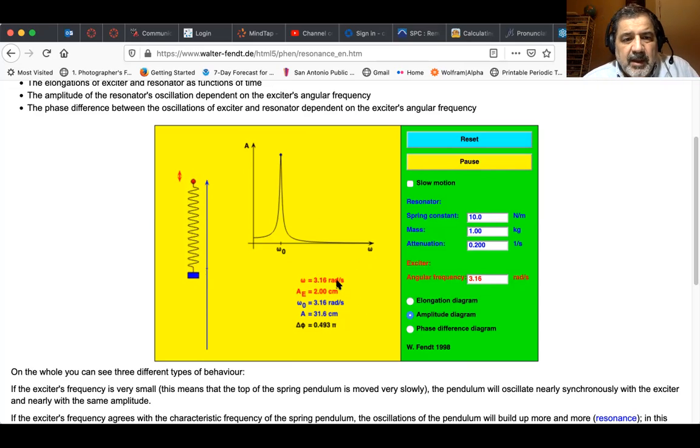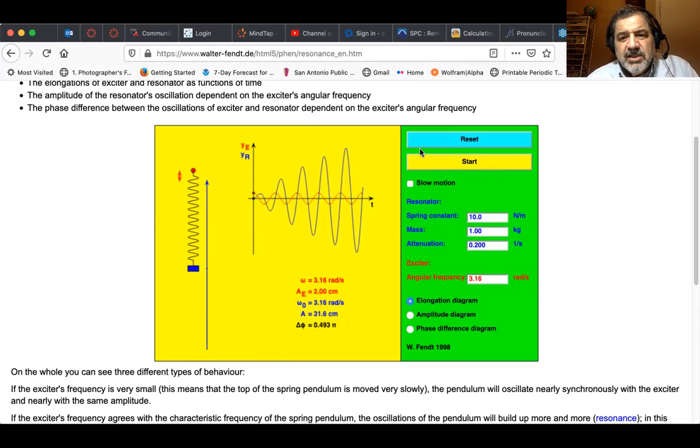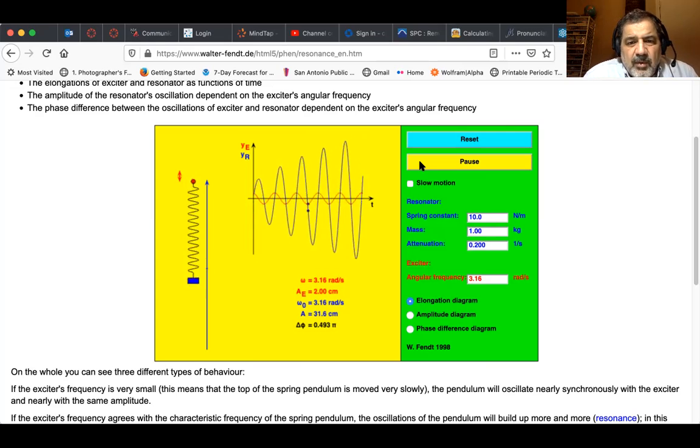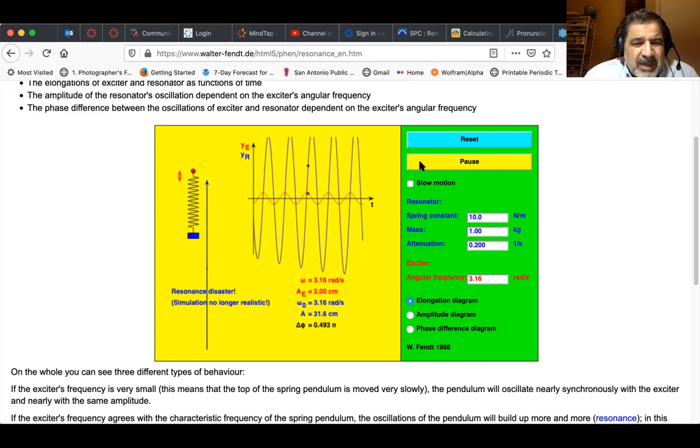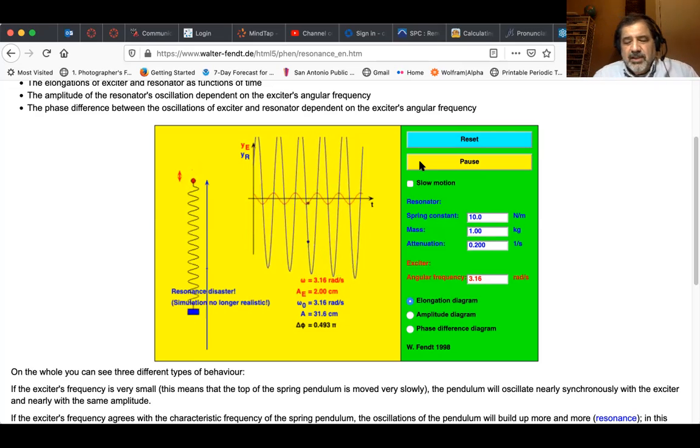Let's wait a little bit. I'm going to reset it and do it again. In a little bit, we're going to get a message. And there it is, resonance disaster simulation, no longer realistic. So let's reset this. Let's look at it on the elongation diagram and let's start. And you can see the excitation is the red, it's 3.16 radians per second. And you can see the amplitude starts getting bigger and bigger and bigger until we get to the resonance disaster. So the bridge collapses at that point.